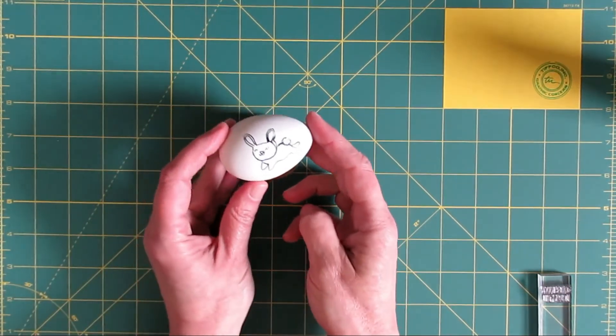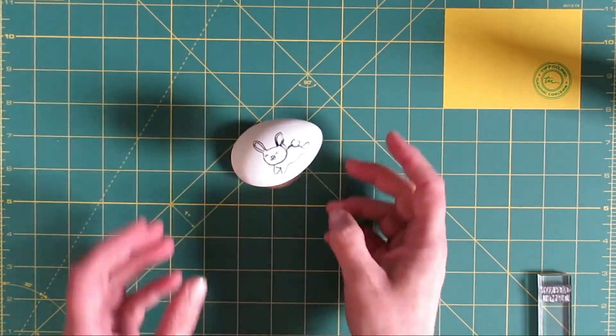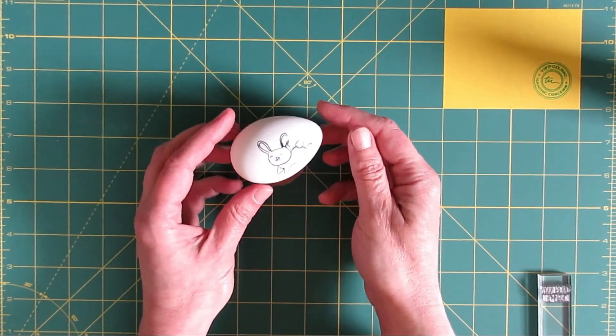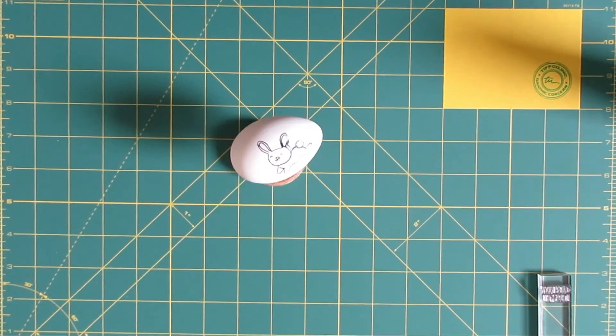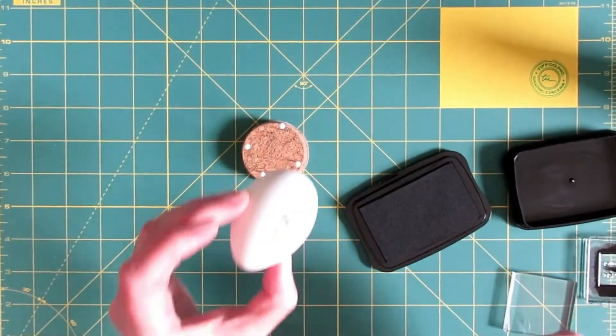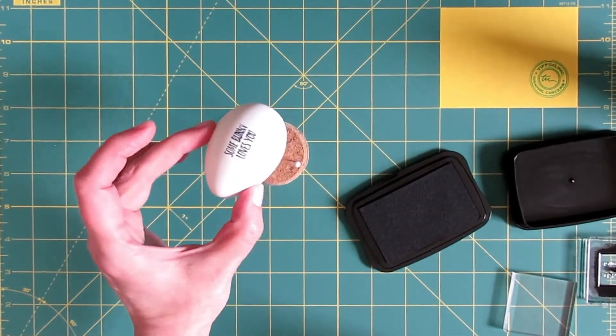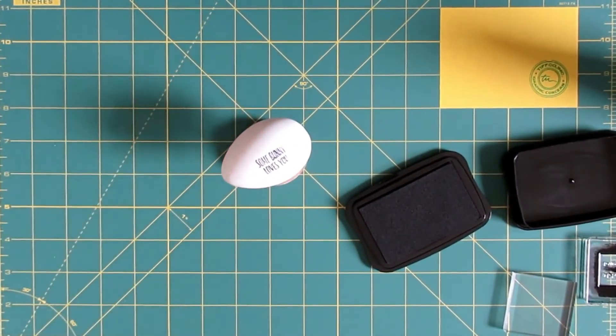Only stamp half of the egg at a time, otherwise you risk smearing the ink. After stamping the first half of the egg, position it on the egg rest, ink side up, to dry. When the ink is dry, stamp the other half of the egg, and then set it aside to dry with the wet ink facing up.